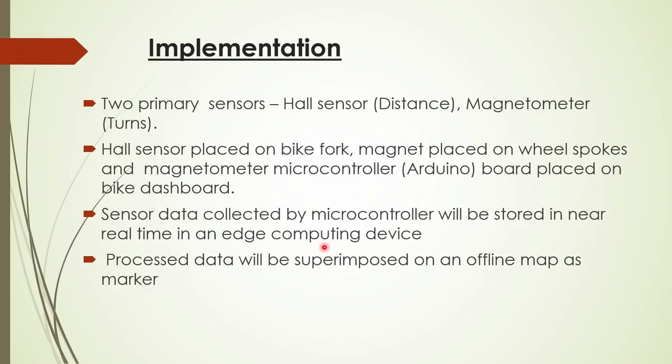For the demo we have two primary sensors: a hall sensor for distance measurement and a magnetometer for any turnings on the roads. It is purely two-dimensional — we are not looking at any height-related information. This is an important assumption. The idea is not to replace GPS entirely; in situations where GPS is unavailable for short durations or specific constrained environments, you rely on this kind of technique.